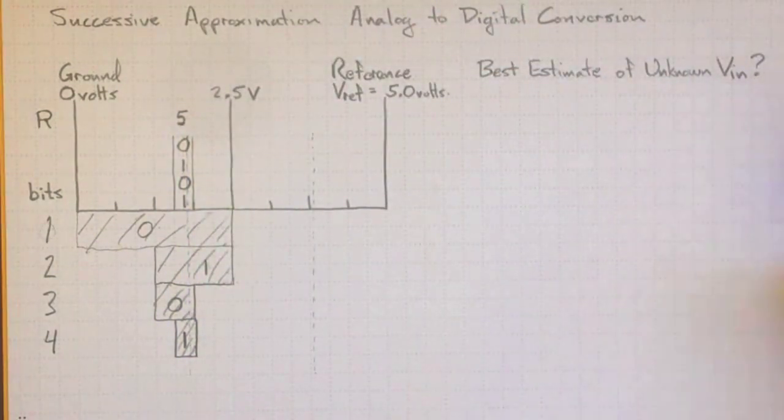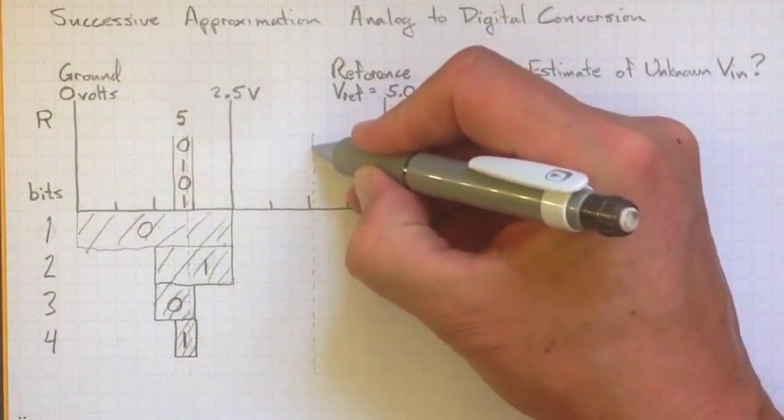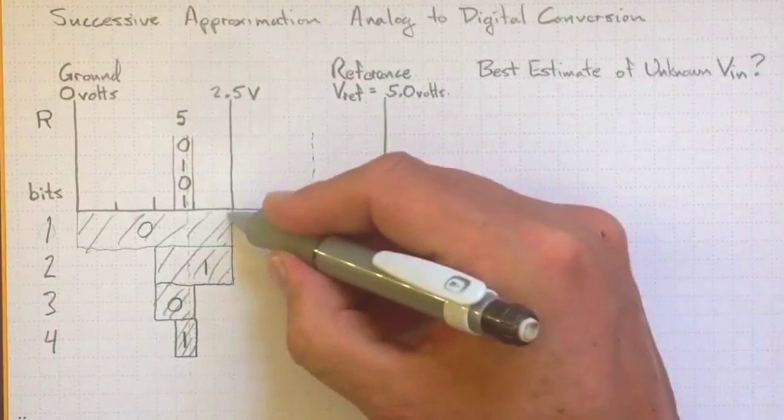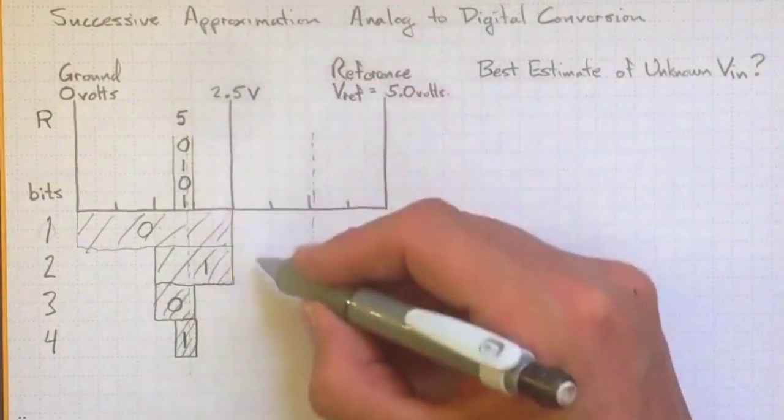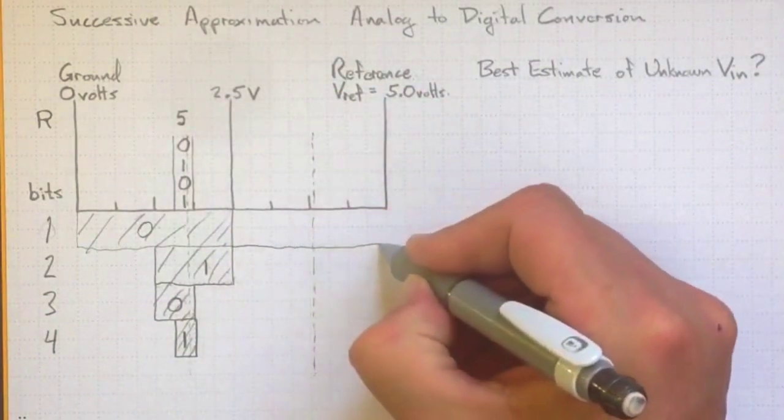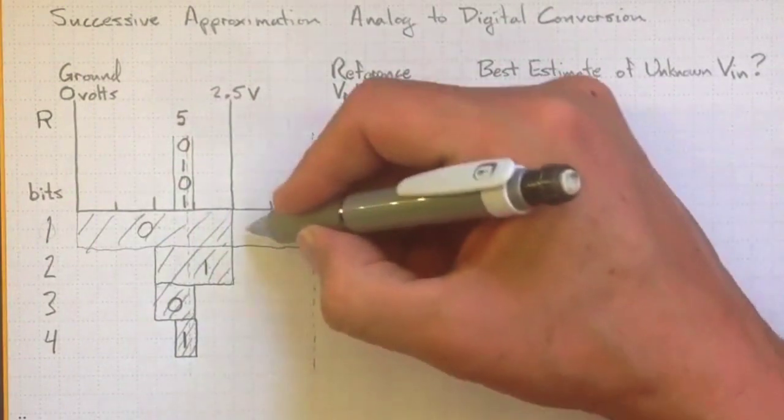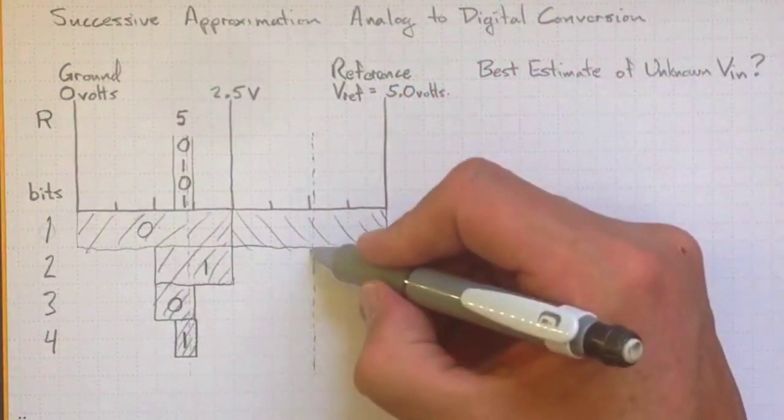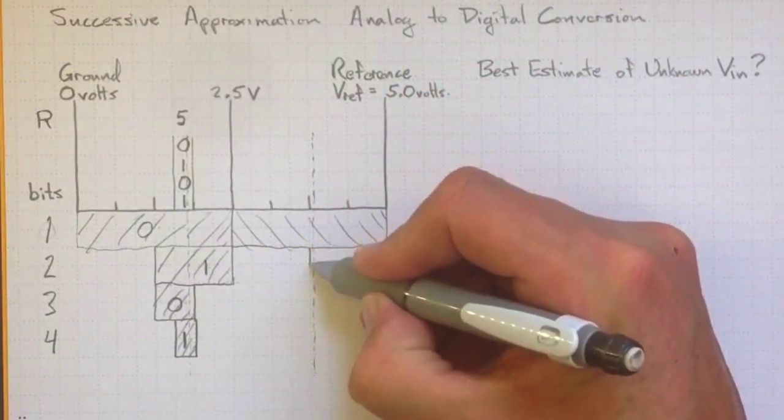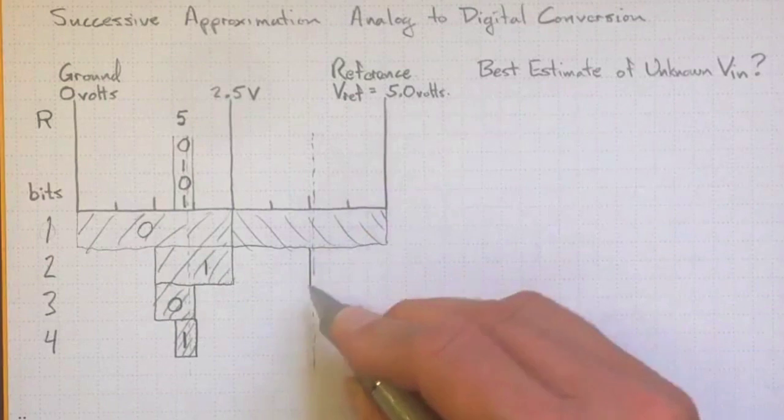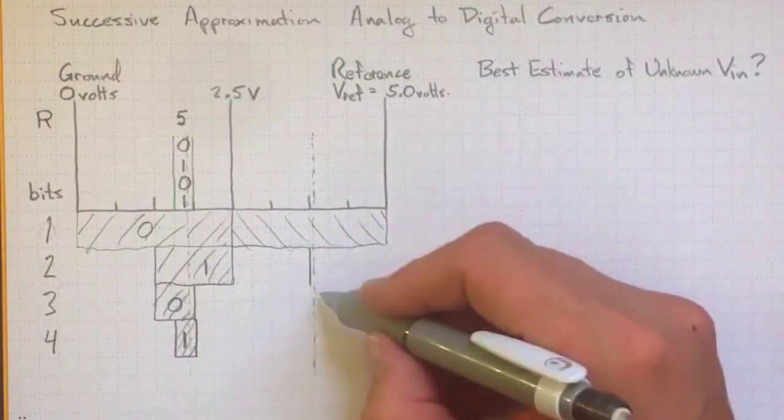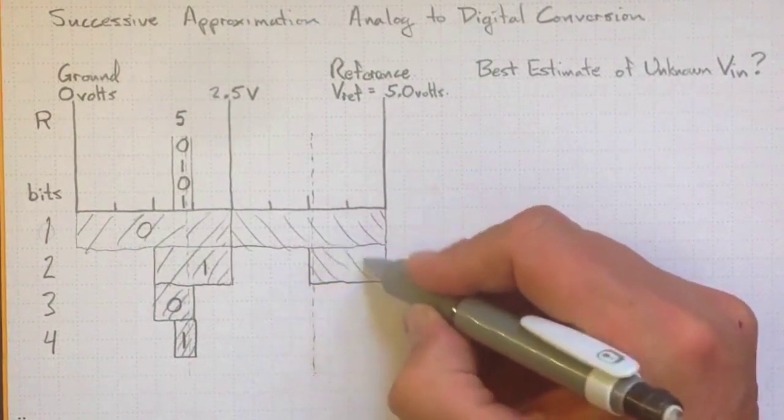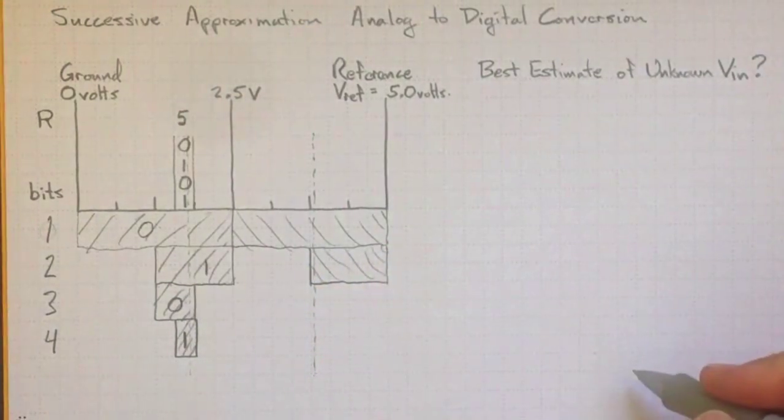So let's try that again with a different voltage. Suppose we had a voltage over here. Well, it's higher than the middle, higher than the 2.5, so we know it's in this region here. And if we then split it in half again, well, it's higher than that value, just a little bit, but it is higher, so we know it's on this side over here. That's our second bit of information.